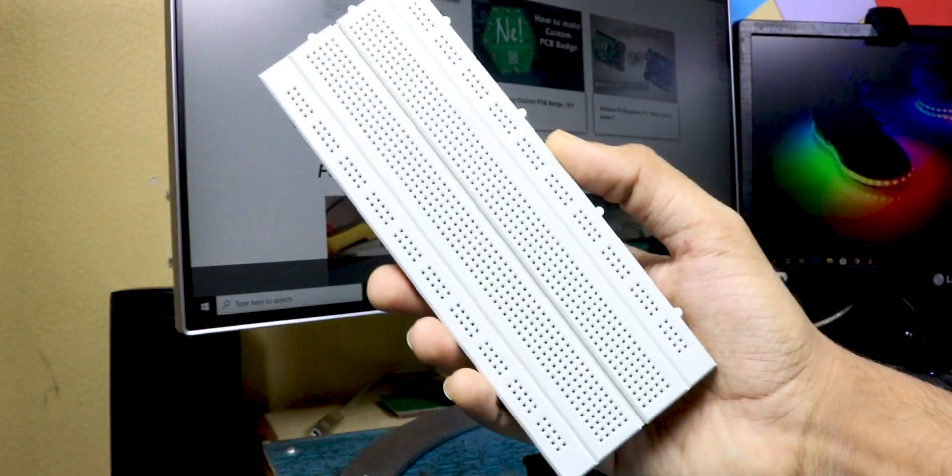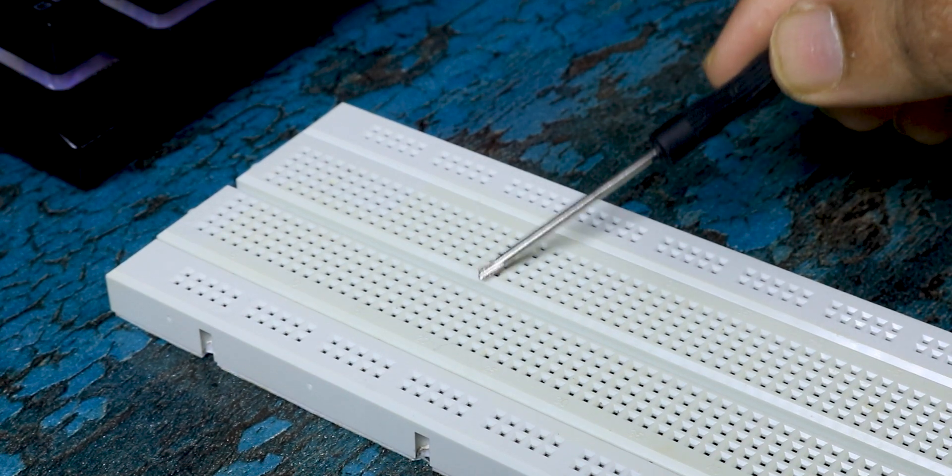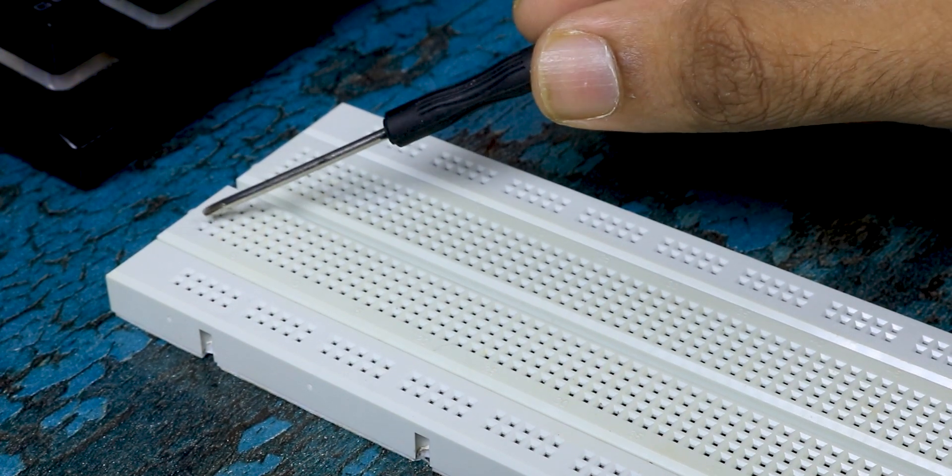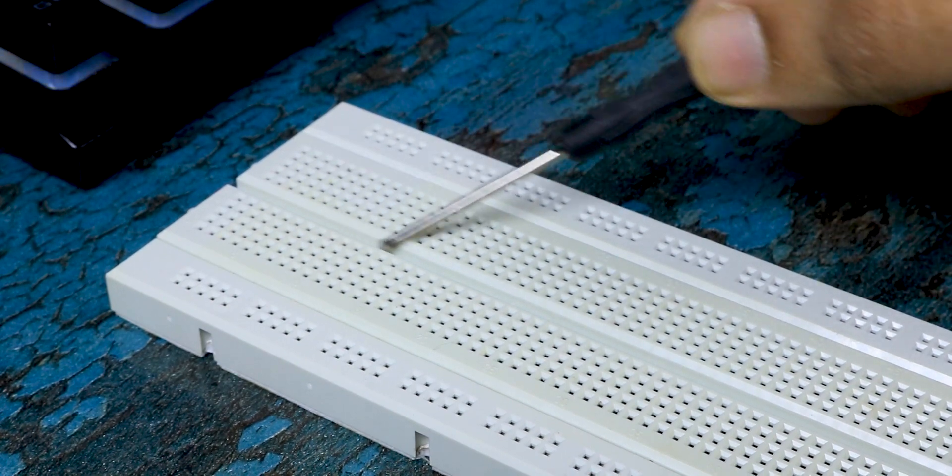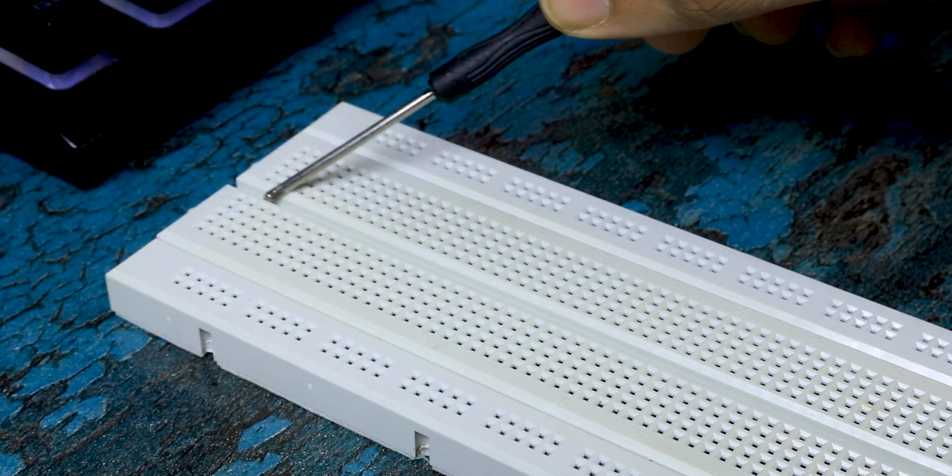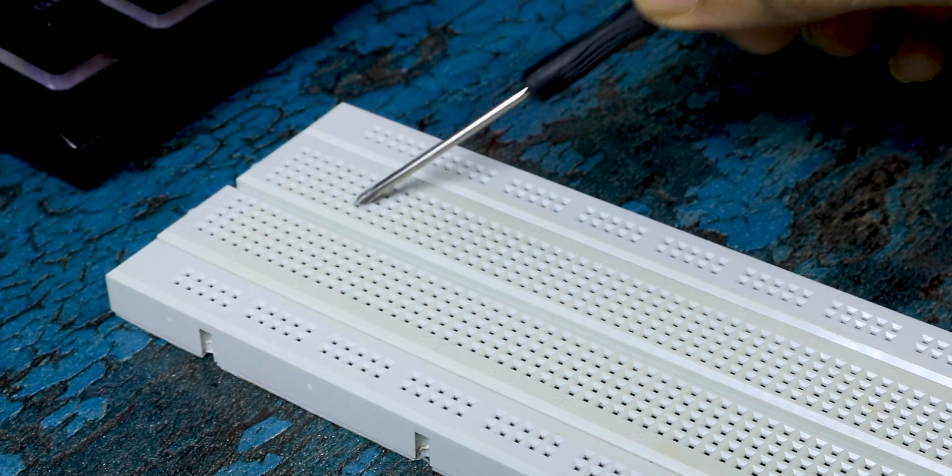Now let's talk about prototyping space. Unlike power lines, these points are connected horizontally in two sets from over here to here, then there is a breakpoint along entire breadboard, and then again it continues from here to here.